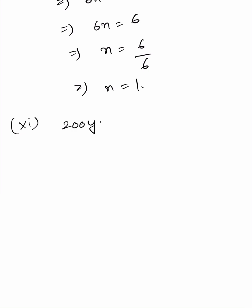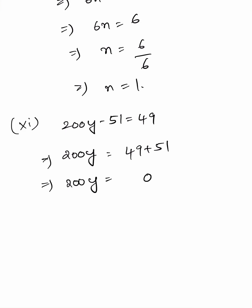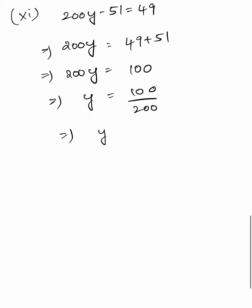Eleventh: 200y minus 51 equals 49, so 200y equals 49 plus 51, giving 200y equals 100, therefore y equals 100 divided by 200, which equals 1 by 2.